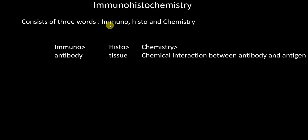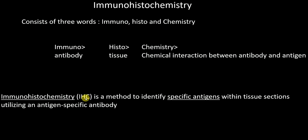So the literal meaning of immunohistochemistry is: immuno means antibody, histo means tissue, and chemistry means chemical interaction between antibody and antigen. The definition is: immunohistochemistry, or simply IHC, is a method used to identify specific antigens within tissue sections using an antigen-specific antibody, and the results can be visualized under a microscope.